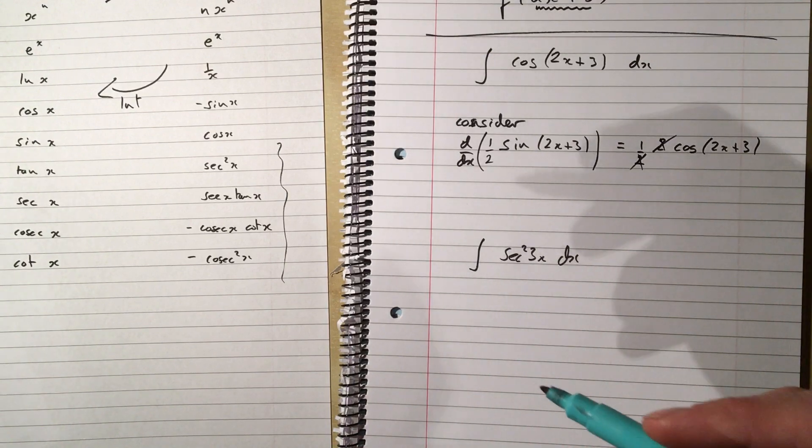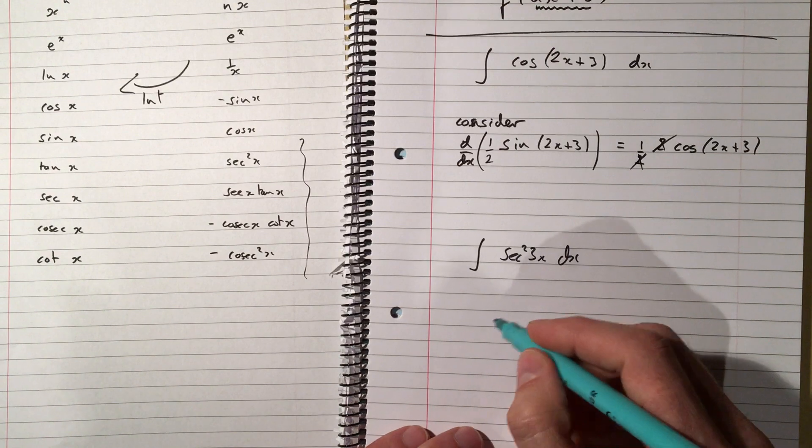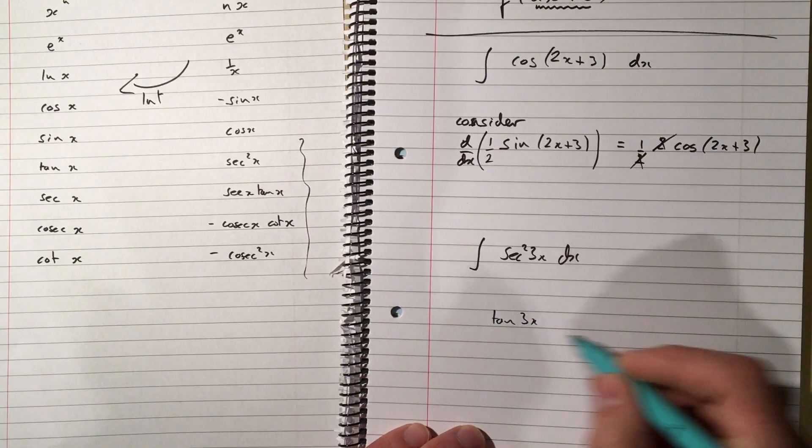I think, well, sec squared, that came from something like a tan. So I think about tan of 3x. I think about the derivative of tan of 3x.